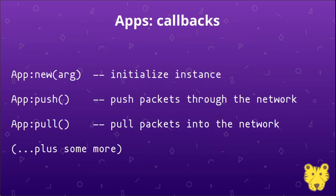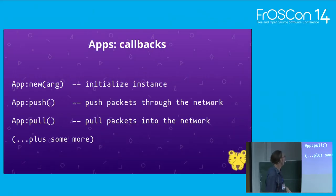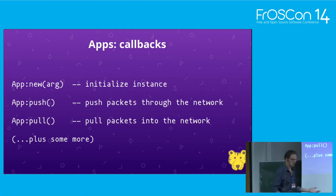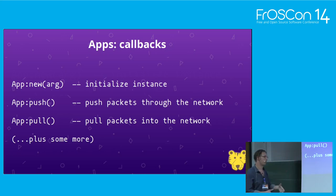At some point you'll want to create your own apps. An app is organized into a bunch of callbacks — I'll cover the three most important ones. The 'new' callback is used to initialize an app instance and is called by engine.configure to create a new instance. It receives the configuration argument we talked about. The 'push' callback is executed during the breath to process packets and exhale them out of the application. The 'pull' callback pulls packets into the app network.